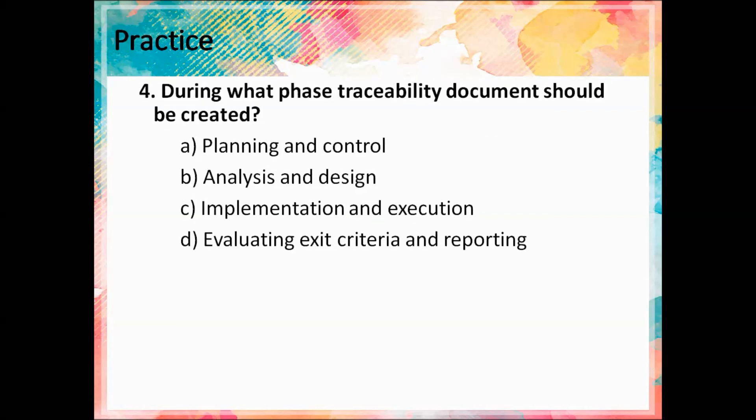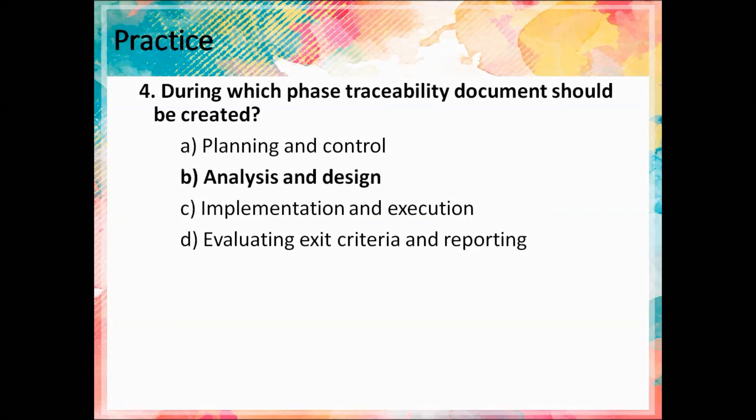Fourth question: during what phase should the traceability document be created? A — Planning and control. B — Analysis and design. C — Implementation and execution. D — Evaluating exit criteria and reporting. The correct answer is B — analysis and design.